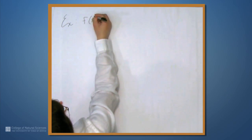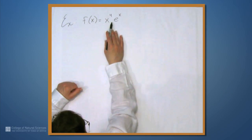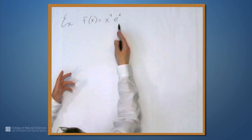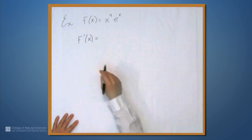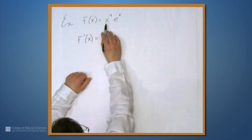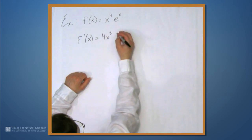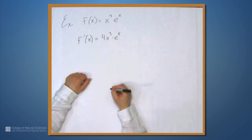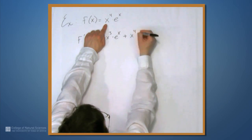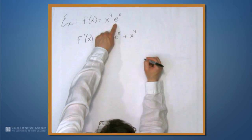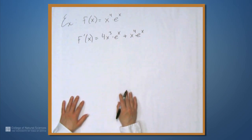Let's suppose now that f is x⁴ times eˣ. We can't get away from the product rule here because there's no way to expand this to get a polynomial — the eˣ is causing a problem. But we have the product rule, so we really don't have a problem. So f' is the derivative of the first part, x⁴, which is 4x³, times the unaltered second part eˣ, plus the first part unaltered, x⁴, times the derivative of the second part. The derivative of eˣ is just eˣ, so we get x⁴ times eˣ. And that's f'.